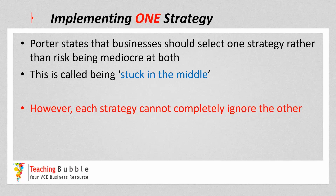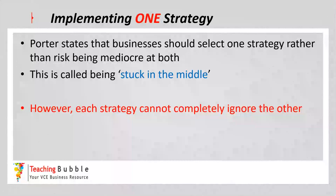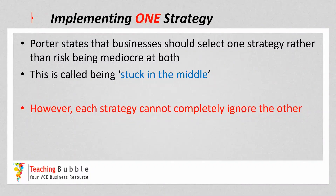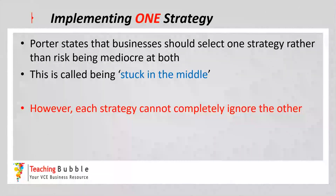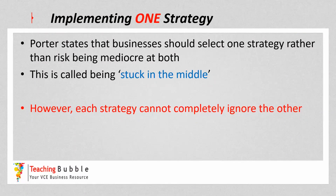Porter stated that it's important for a business to implement only one strategy and not try to implement both. The idea is that the business should be the leader in the industry at the chosen strategy. If a business tries to implement both, they risk being mediocre at both rather than the best at one — Porter calls this being stuck in the middle. However, each strategy cannot completely ignore the other. When lowering costs, the business needs to be careful about removing unique features that add value to customers. Similarly, with differentiation, if the increased costs of being unique offset the premium price, the business will lose its competitive advantage. So while it's important to focus on one strategy, they can't completely ignore the other.